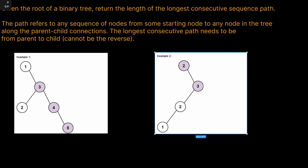Our solution here starts at node 3. It goes to 4 because there's a difference of 1 between them. Then from 4, we add 1 to get to 5. So there are 3 nodes in this chain, and therefore we return 3 as our final answer.